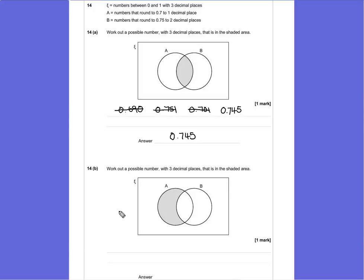Question 14b says work out a possible number with three decimal places that is in the shaded area to the left. So this time, in a similar way we did before, we're looking for a number that rounds to 0.7, but does not round to 0.75 in any way. We've already come up with a few solutions up here, because we can choose to look at 0.690 again.